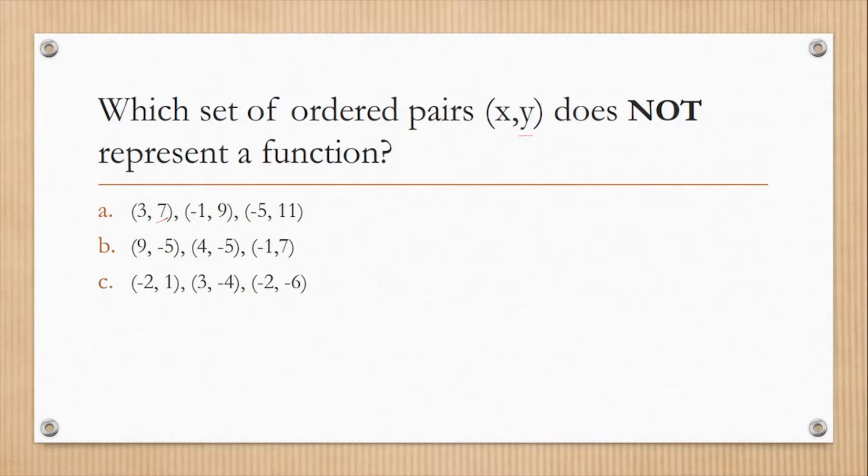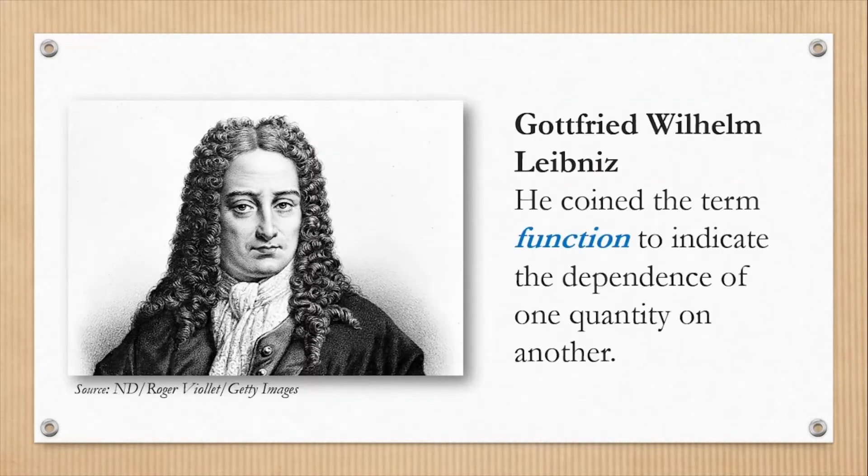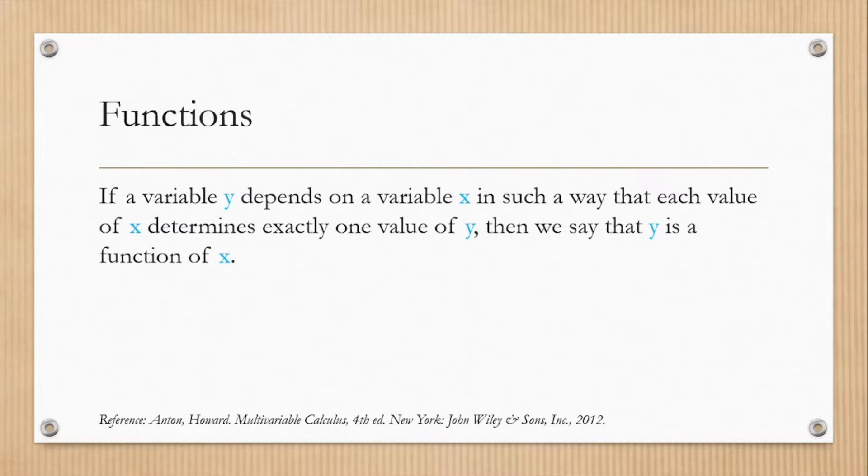The answer is letter C. How come it is not a function? Since the value of x = -2 has two corresponding values of y, that is 1 and -6, hence it is not a function. It does not satisfy the condition that y is a function of x if there is only exactly one value of y for a given value of x.